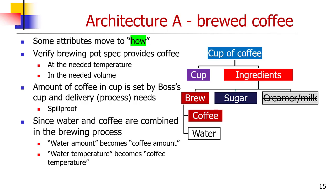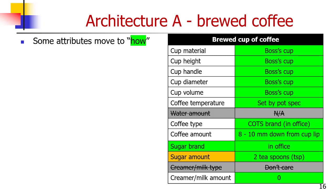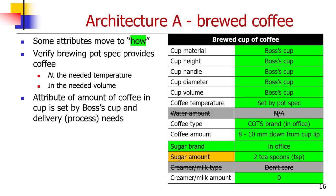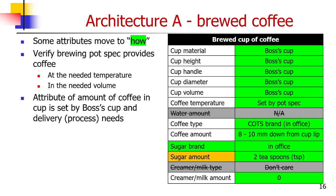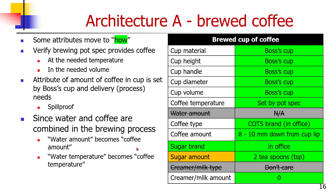So the architecture hierarchical or structural form is shown, and the properties are: cup material is boss's, coffee temperature set by the pot, coffee type is whatever is in the office, coffee amount is 8 to 10 millimeters down from the cup lip — that's what Fred determined would be a good spill-proof level — sugar brand is in the office, sugar amount is 2 teaspoons, and creamer or milk is don't care, making sure definitely no creamer. Fred has to verify that the pot spec provides the coffee at the needed temperature and needed volume, with the attribute of the amount of coffee in the cup set by the boss's cup and delivery needs, shown to be 8 to 10 millimeters down from the cup lip. Sugar is in the office — still 2 teaspoons — and creamer is definitely none, left in there for a specific reason I'll tell you in a moment.